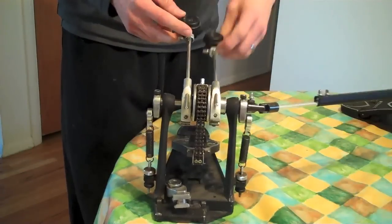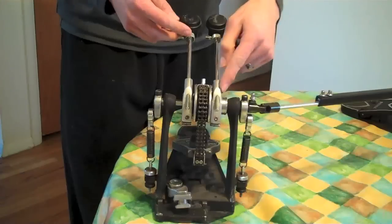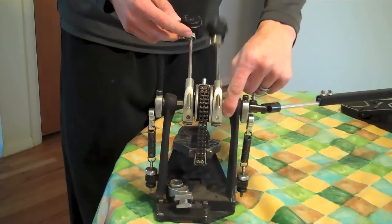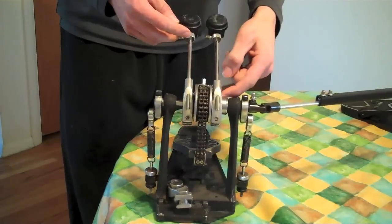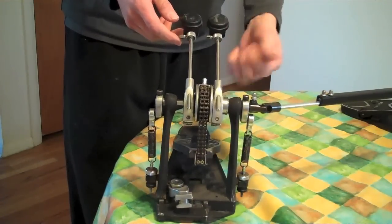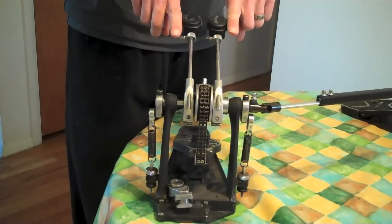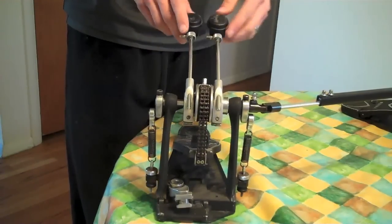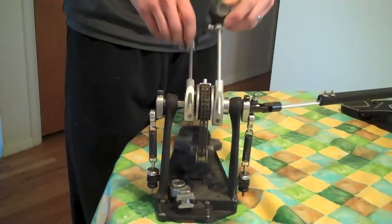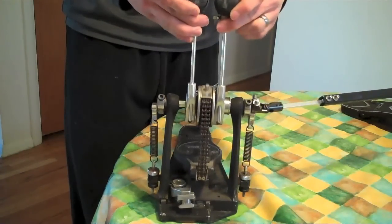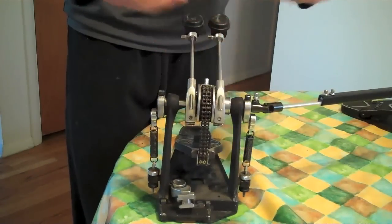You can adjust this slave side beater on its little hinge area here. And so from the factory, it was all the way to the left, which put these beaters much farther apart. So I adjusted it to the center because as long as they're not touching, there's no reason they shouldn't be hitting as close together on the drum head as possible.